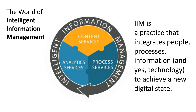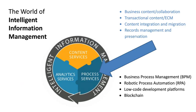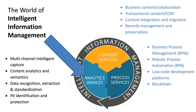IIM is a practice that integrates process, information, and technology to achieve a new digital state. Each one of the puzzle pieces — starting with content services, which is one of the more familiar areas for AIM — uses the word 'services' intentionally, because modern enterprises need to link these capabilities together on the fly to respond to continually changing business environments. Content services includes things like business content, collaboration, and transactional content. The process services piece is where things like business process automation, robotic process automation, low code, and blockchain may come in. There was some discussion about that at the board yesterday, so these things may change. The same goes for multichannel intelligent capture, with quite a bit of discussion on whether that belonged there or back in content services. There are also other things having to do with analytics and data protection.